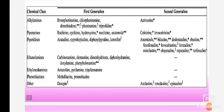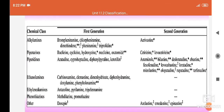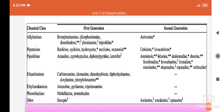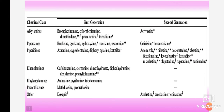The main important chemical classes are alkylamine, piperazine, piperidines, ethanolamine, ethylene diamines, and phenothiazines, along with some other classes. In each class there are different drugs. First generation drugs have some side effects, so a new class — second generation antihistamines — was developed. In each chemical class, some drugs are first generation and some are second generation.